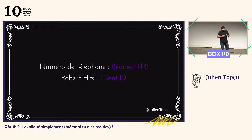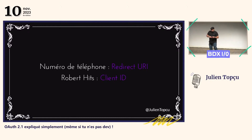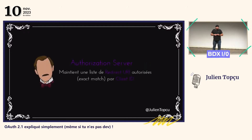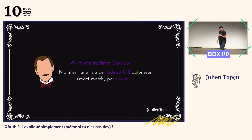Quelques mots de vocabulaire : le numéro de téléphone, c'est le redirect URI, l'URL de redirection. Et Robert Ritz, c'est l'identifiant de Robert Ritz, c'est le client ID. Donc le rôle de l'authorization server, c'est de maintenir une liste d'URL de redirection autorisées pour chacun des client IDs en exact match.